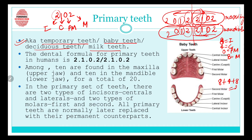Among these 20 teeth, 10 are in the maxilla (upper jaw) and 10 are in the mandible (lower jaw). There are two types of incisors — central incisors and lateral incisors — and two types of molars — first molar and second molar. All primary teeth are normally later replaced by their permanent counterparts.